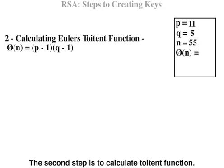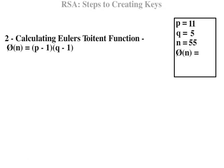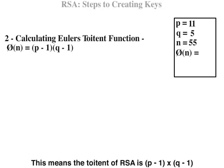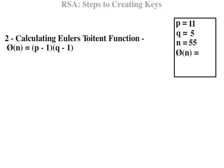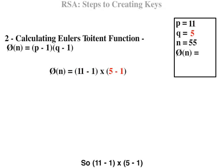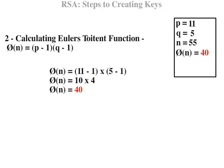The second step is to calculate the totient function. This means the totient of the RSA modulus is P minus 1 times Q minus 1. So 11 minus 1 times 5 minus 1 equals 10 times 4, equaling 40.